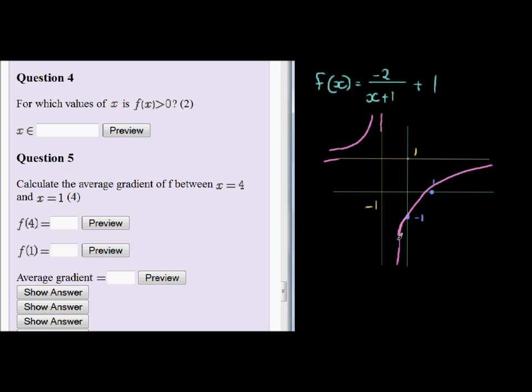Okay, now we want to know for which x values will my graph be above the x-axis. Now where is the x-axis? Well, there is the x-axis. Above the x-axis is then all of these values. So the only part that should be excluded is the part from here downwards.